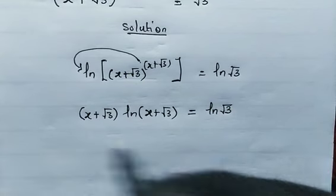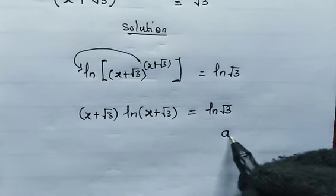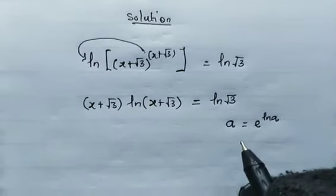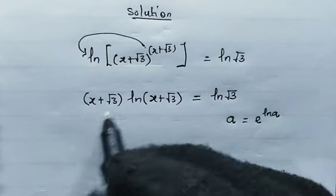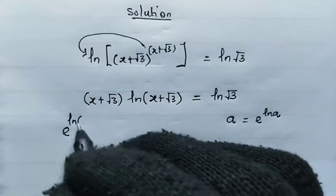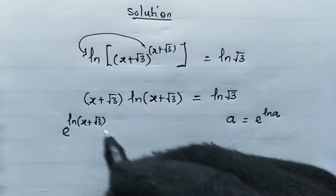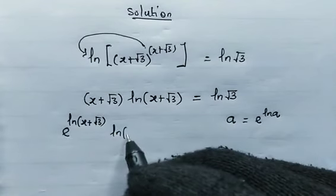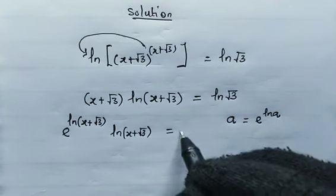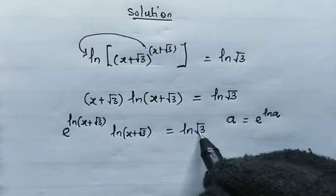Now, from here, remember, a can be written as e to the power of natural log of a, right? So from here, x plus root 3, we can actually write it as e, raised by of the natural log of x plus root 3. Then, multiply by the natural log of x plus root 3. From the right, this equals the natural log of root 3.